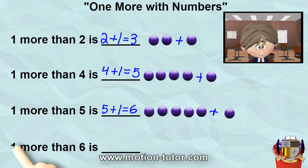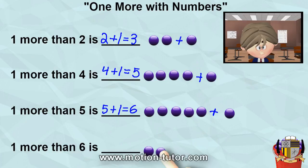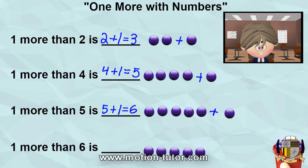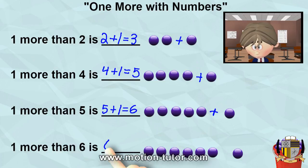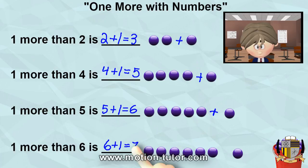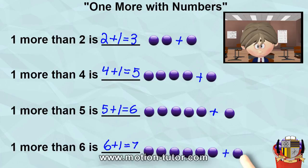One more than six is — let's look. One, two, three, four, five, six. And one more will make seven. So one more than six is seven. So six plus one more is equal to seven. Six plus one is equal to seven.